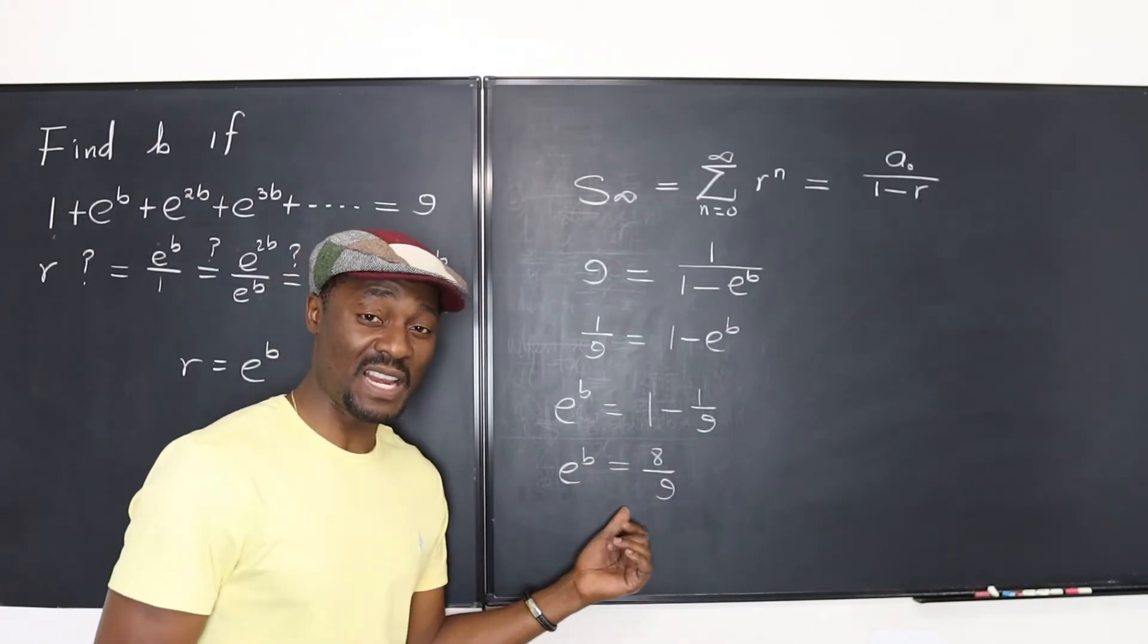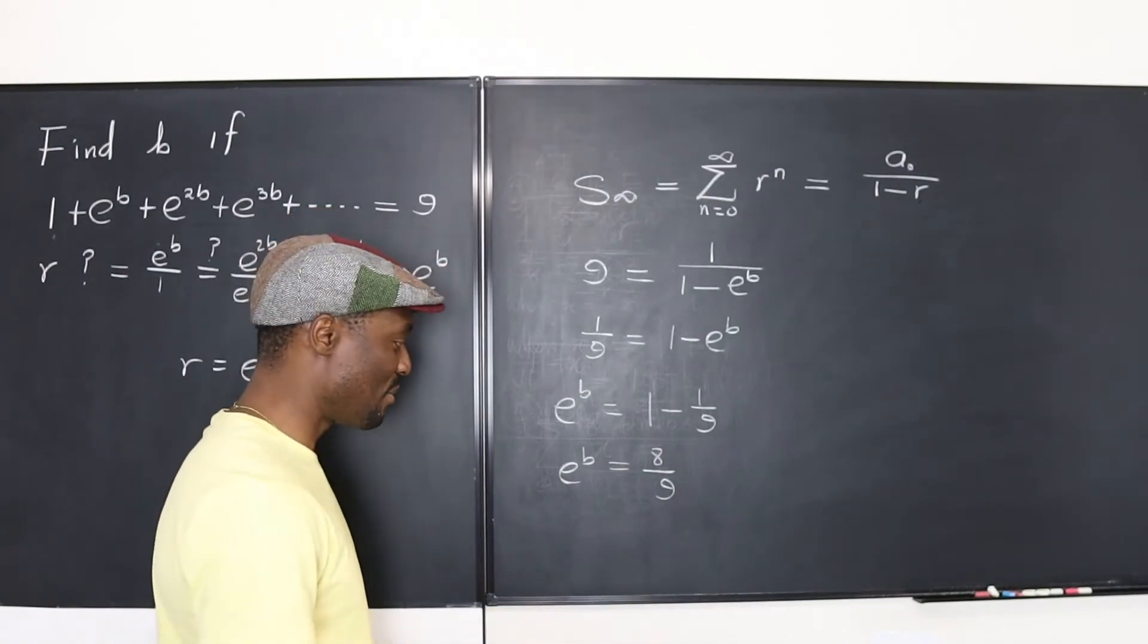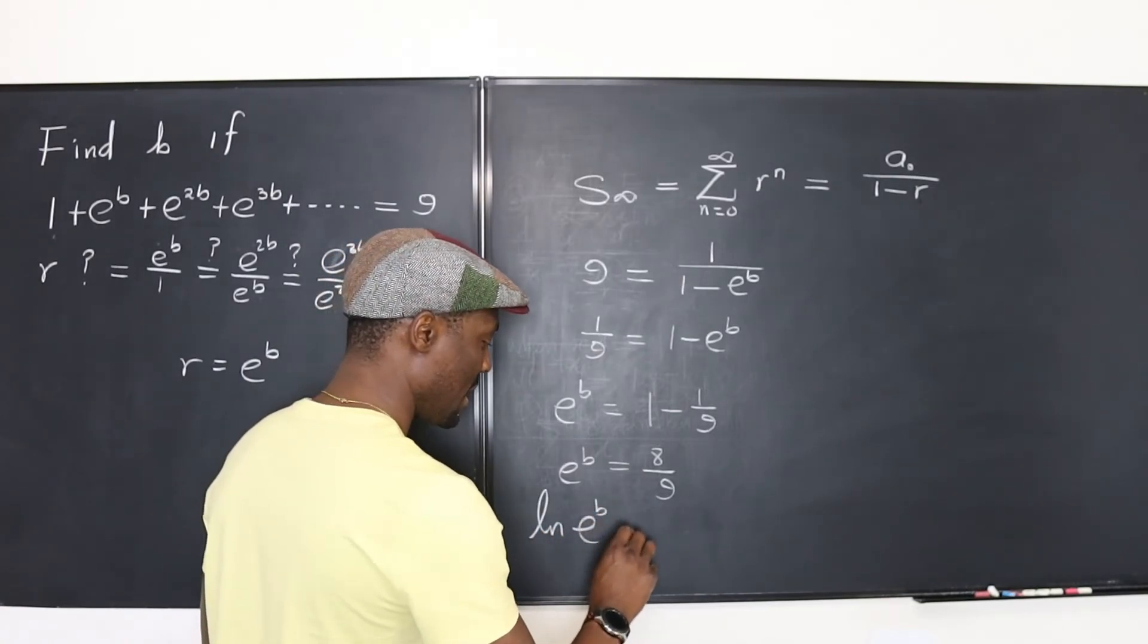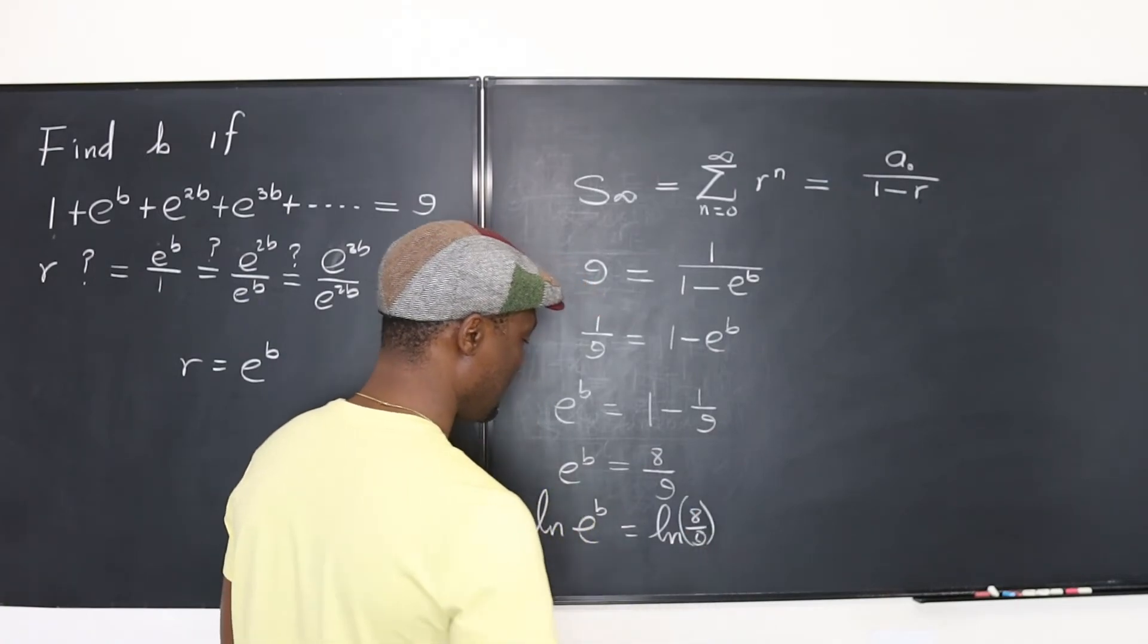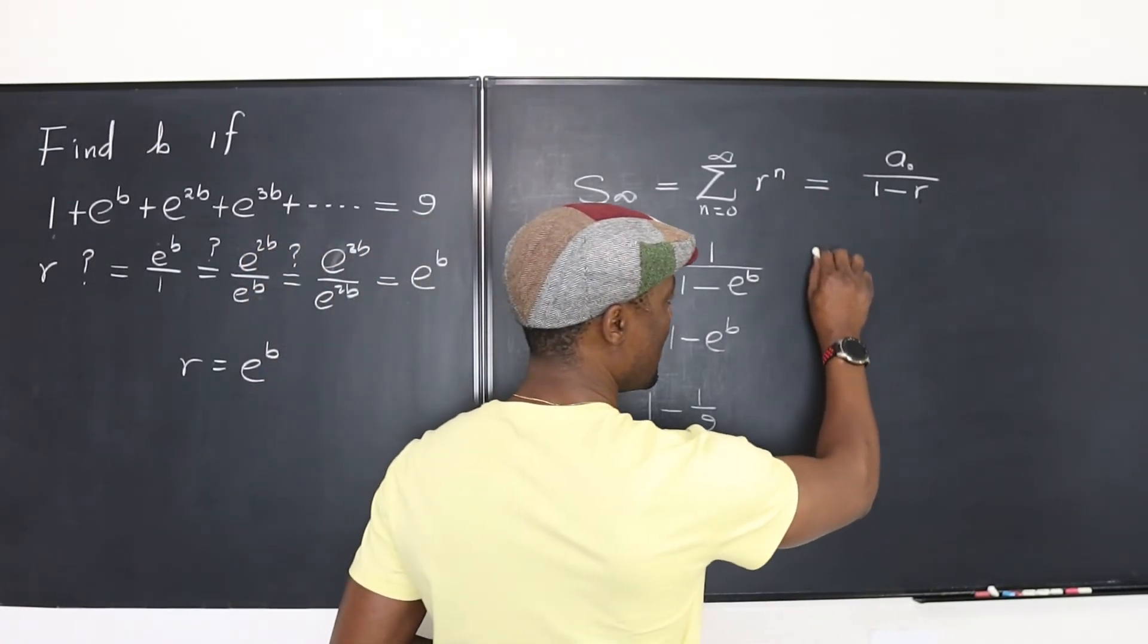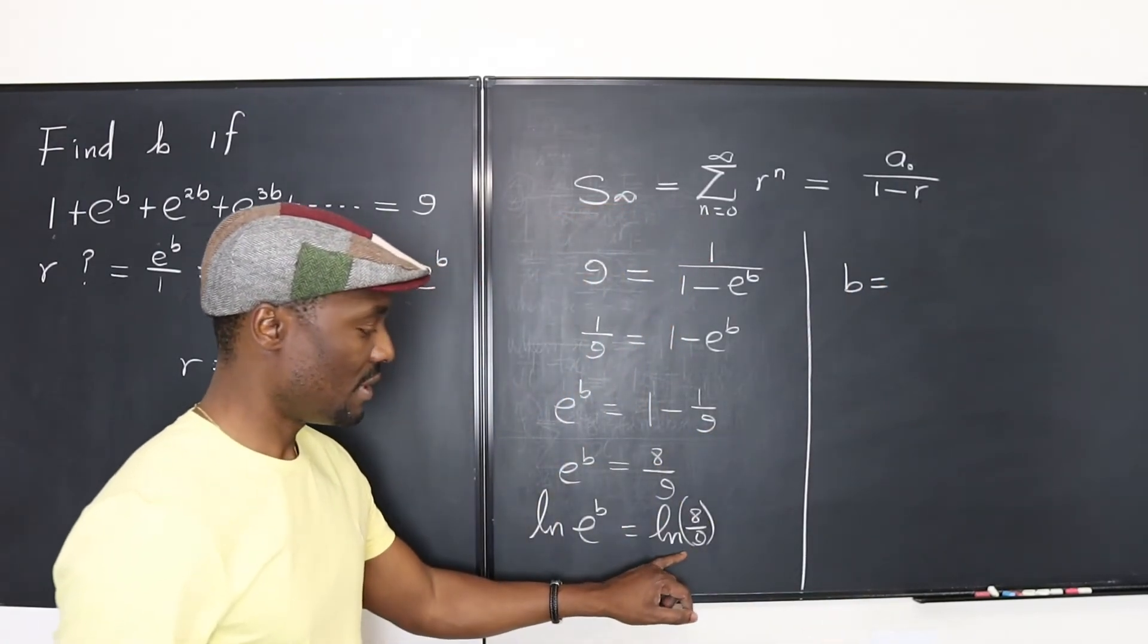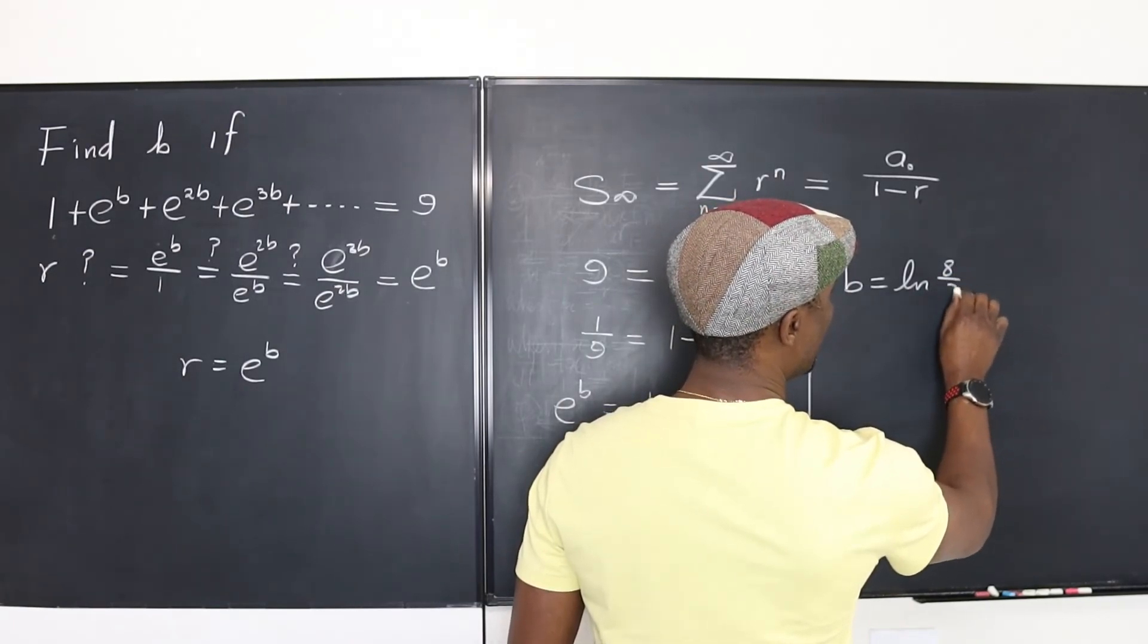Well, for me to just solve anything that contains e, I need to introduce the natural log function, remember? So, if I take the natural log of both sides, ln of e to the b will be equal to ln of 8 over 9. That's it. So, it tells me that b is equal to the natural log of 8 over 9. This is beautiful.